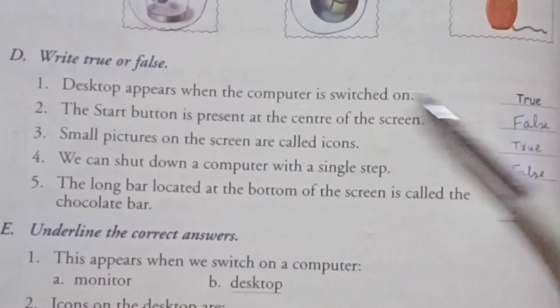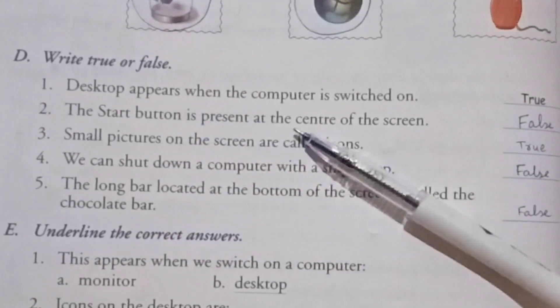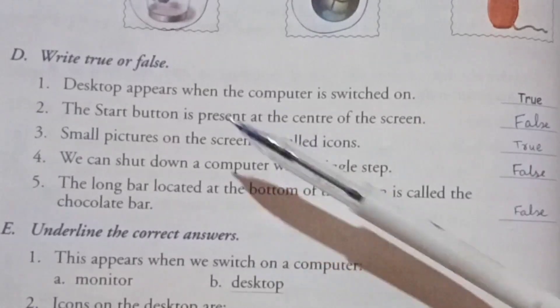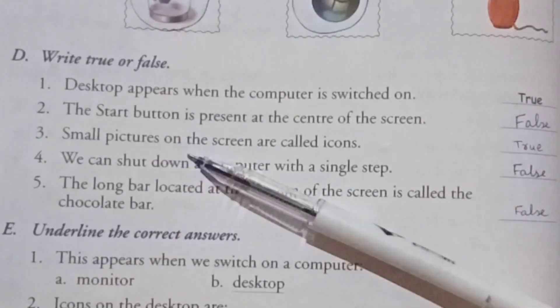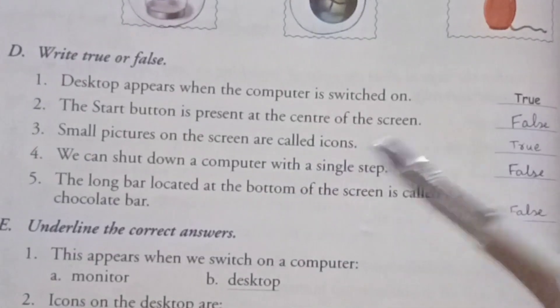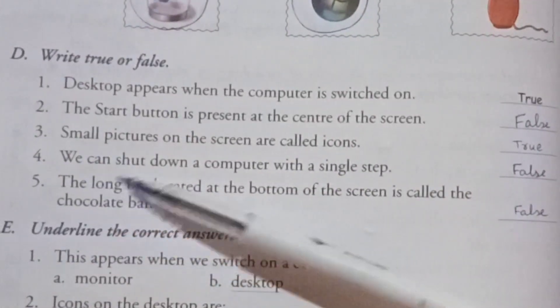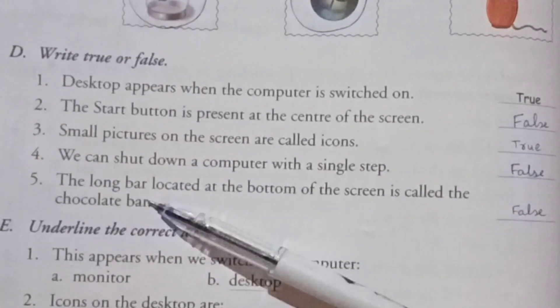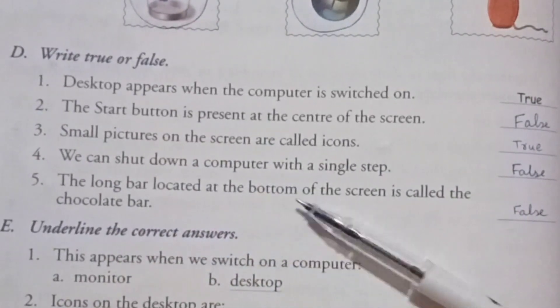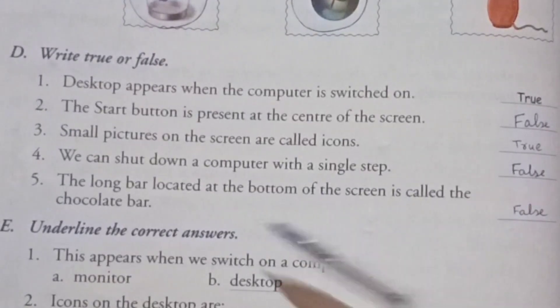The start button is present at the center of the screen. False. Three, small pictures on the screen are called icons. True. Fourth, we can shut down the computer with a single step. False.